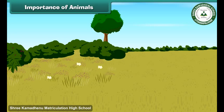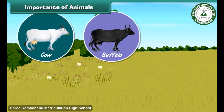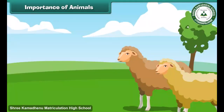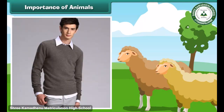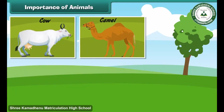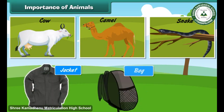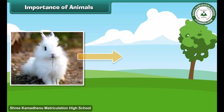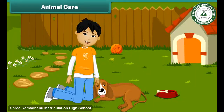Animals help us in many ways. Cows, buffaloes, and goats give us milk. Sheep give us wool that keeps us warm in winters. Cows, camels, and snakes give us leather for jackets, bags, and shoes. Some animals give us fur for coats, jackets, and mufflers.